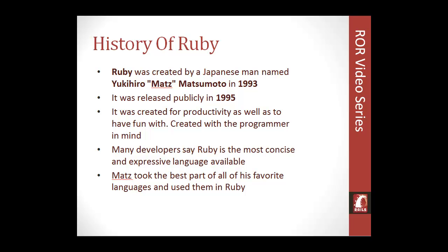A little bit of history on Ruby: it was created by a Japanese man named Yukihiro Matsumoto, and he's better known as Matz — M-A-T-Z. He created Ruby in 1993, and it was released to the public in 1995.